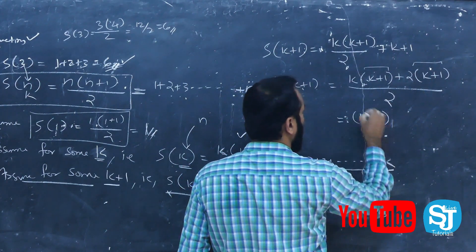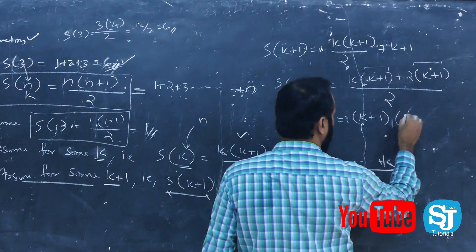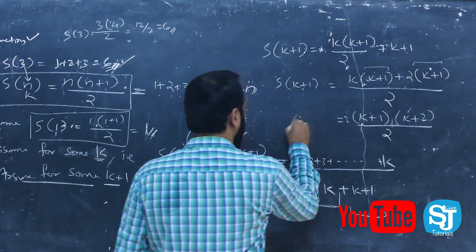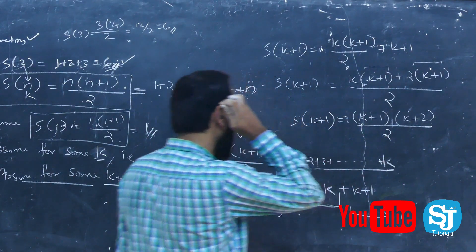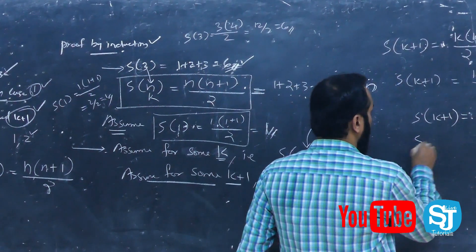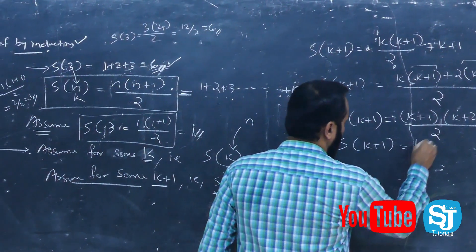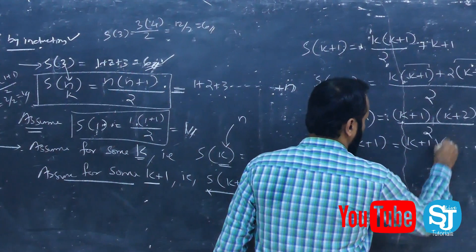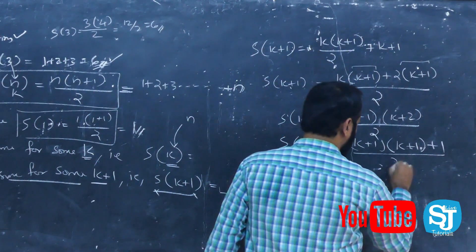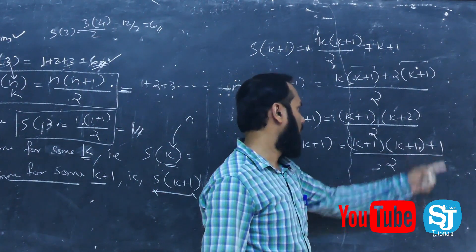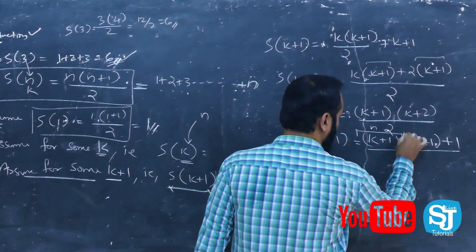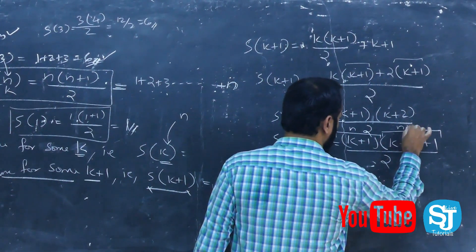S of k plus 1, into k plus 2, divided by 2. That is k plus 1 into k plus 1 plus 1, divided by 2. This shows S of k plus 1 equals (k+1)(k+2)/2, divided by 2.